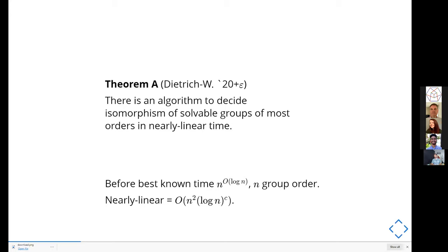We're not doing this in full generality because there's a lot of theory showing this is a hard problem — it's been around 50 to 100 years depending on where you put the starting flag. For general groups of order n, you'd need to work through n^(log n) steps to test if two groups are equal. What Dietrich and I have been working on is making this nearly linear — roughly an n-squared algorithm. We go from n^(log n) down to n-squared, which is a complexity win.